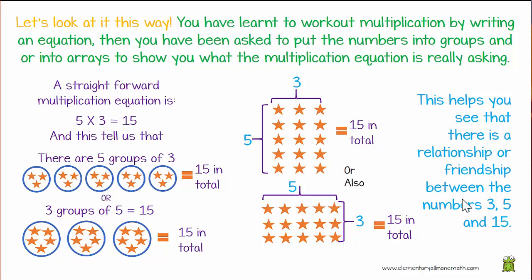Let's look at it this way. You have learnt to work out multiplication by writing an equation. Then you have been asked to put the numbers into groups and or into arrays to show you what the multiplication equation is really asking. Here's a straightforward multiplication equation for you: 5 times 3 equals 15, and this is actually telling us that there are 5 groups of 3 totaling 15.